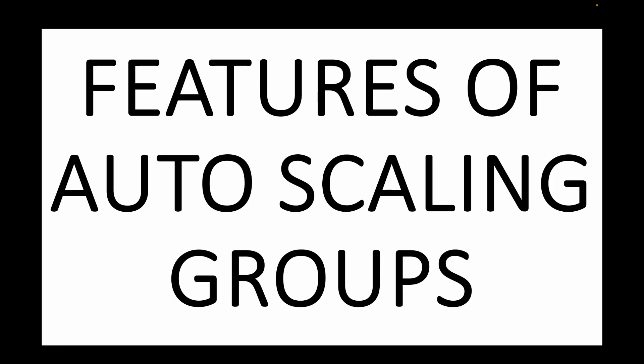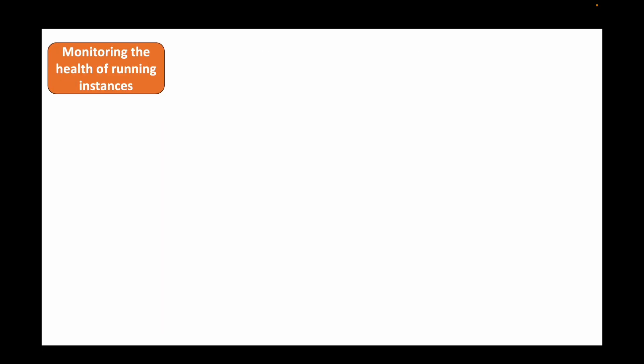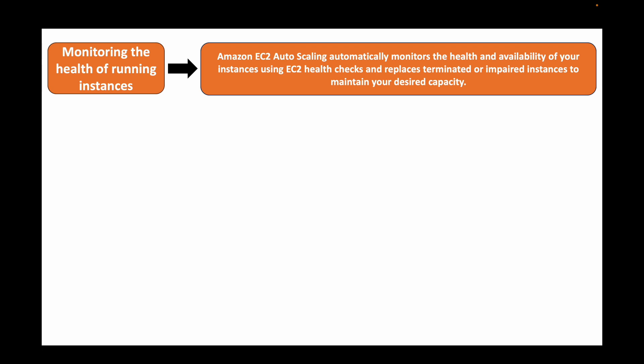Next, let's look at some of the features provided by auto scaling groups. The first feature is monitoring the health of your running EC2 instances. Auto scaling group automatically monitors your EC2 instances for overall health and availability. For example, if you have five instances and one goes down, the auto scaling group detects that and replaces it with a new instance, ensuring you always have the five instances. It continuously monitors your instances for health and availability.